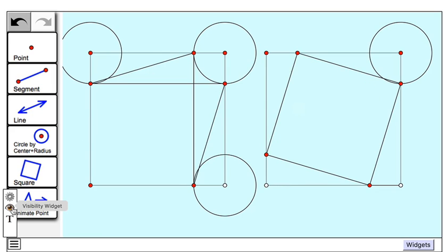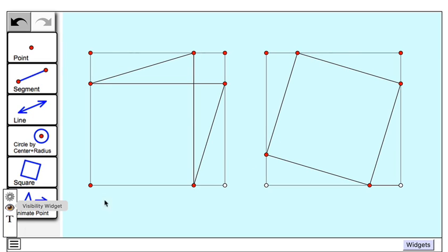And now all that's left to do is to tap on the visibility widget and select those objects that I do not want to see. And that would be these four circles. And tap again, and they are hidden.